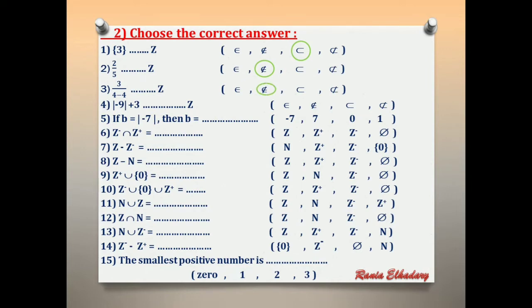Number 4: absolute of negative 9 plus 3 — Z. Absolute of negative 9 is 9. 9 plus 3 equals 12. 12 exists in Z. Answer: belong.